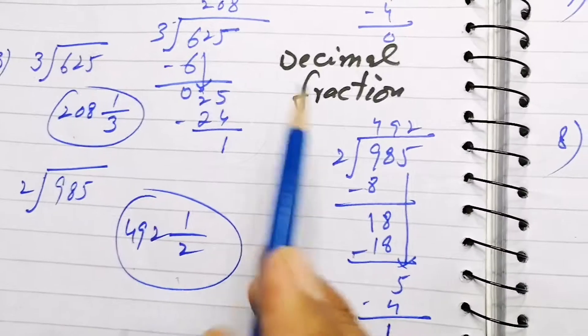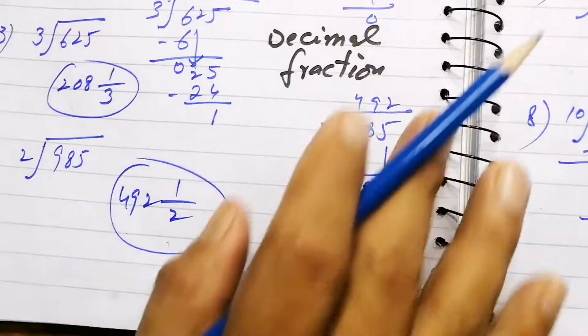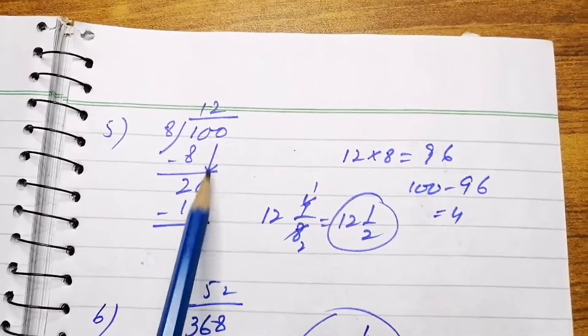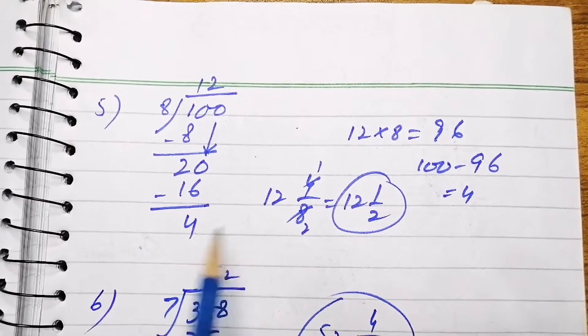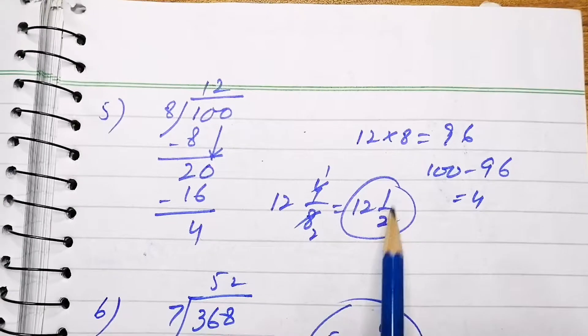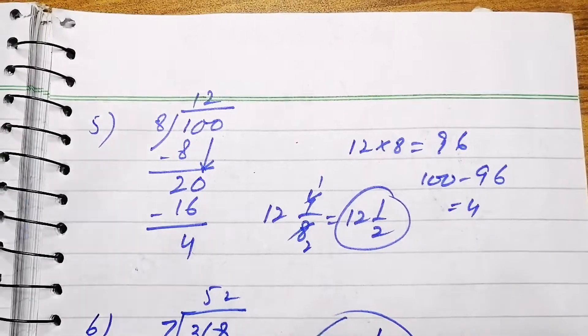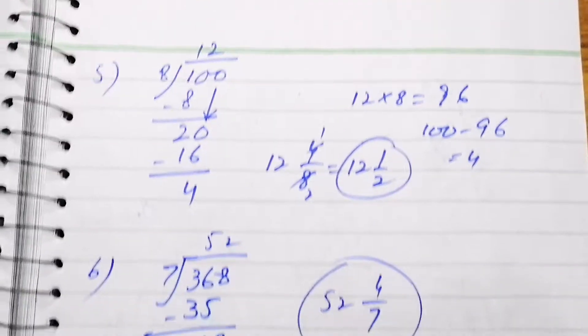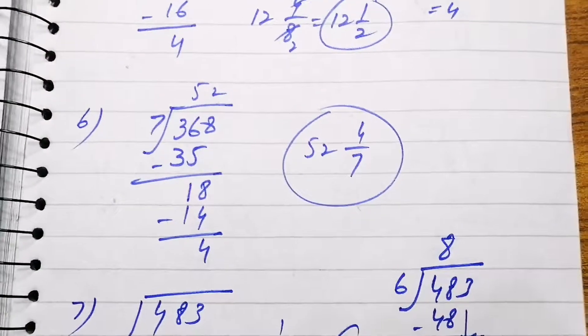You can also use a calculator if you are doing this, and decimal fractions can be used for answers. Here 100 by 8, this is the long division method. 12 whole 1 over 2 is the answer. 12 8s are 96, and 100 minus 96 is 4. Then question 6 is there, answer is in mixed fraction.